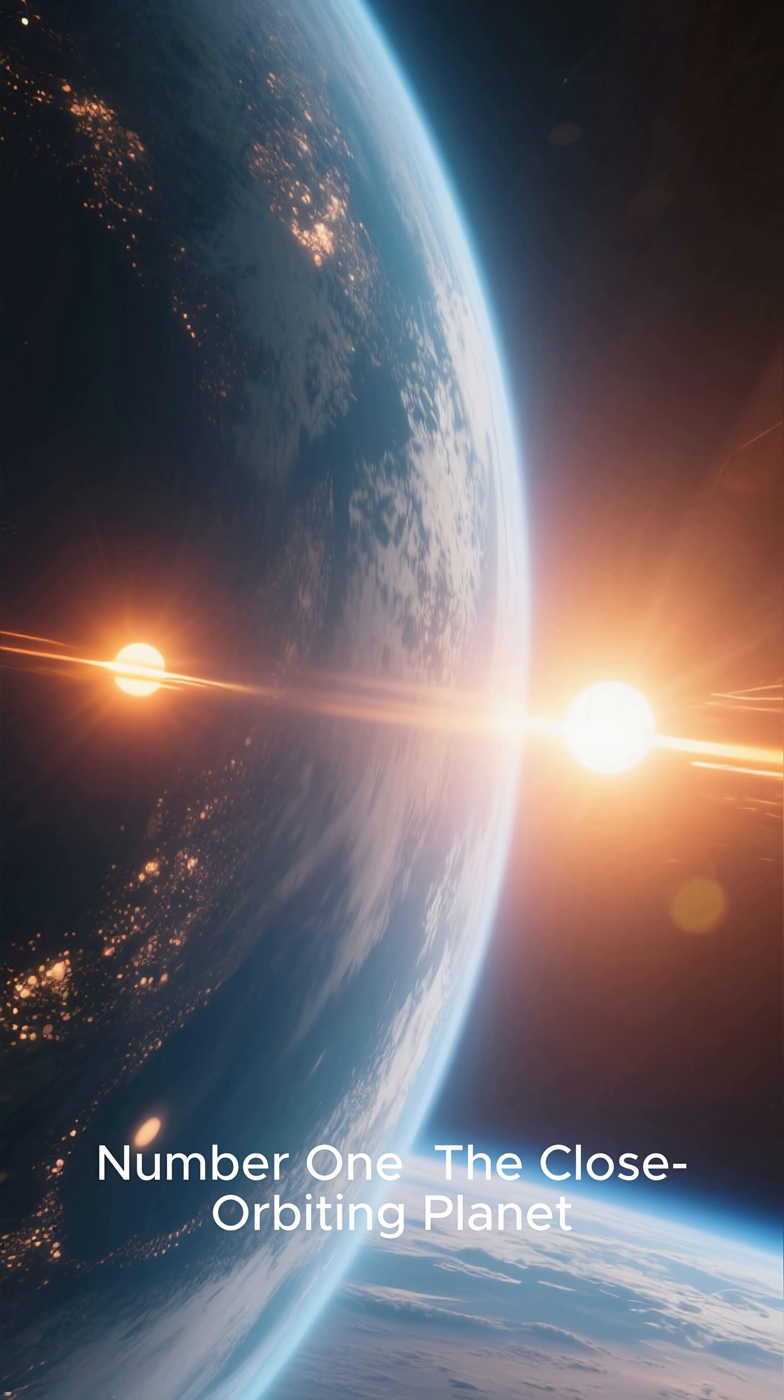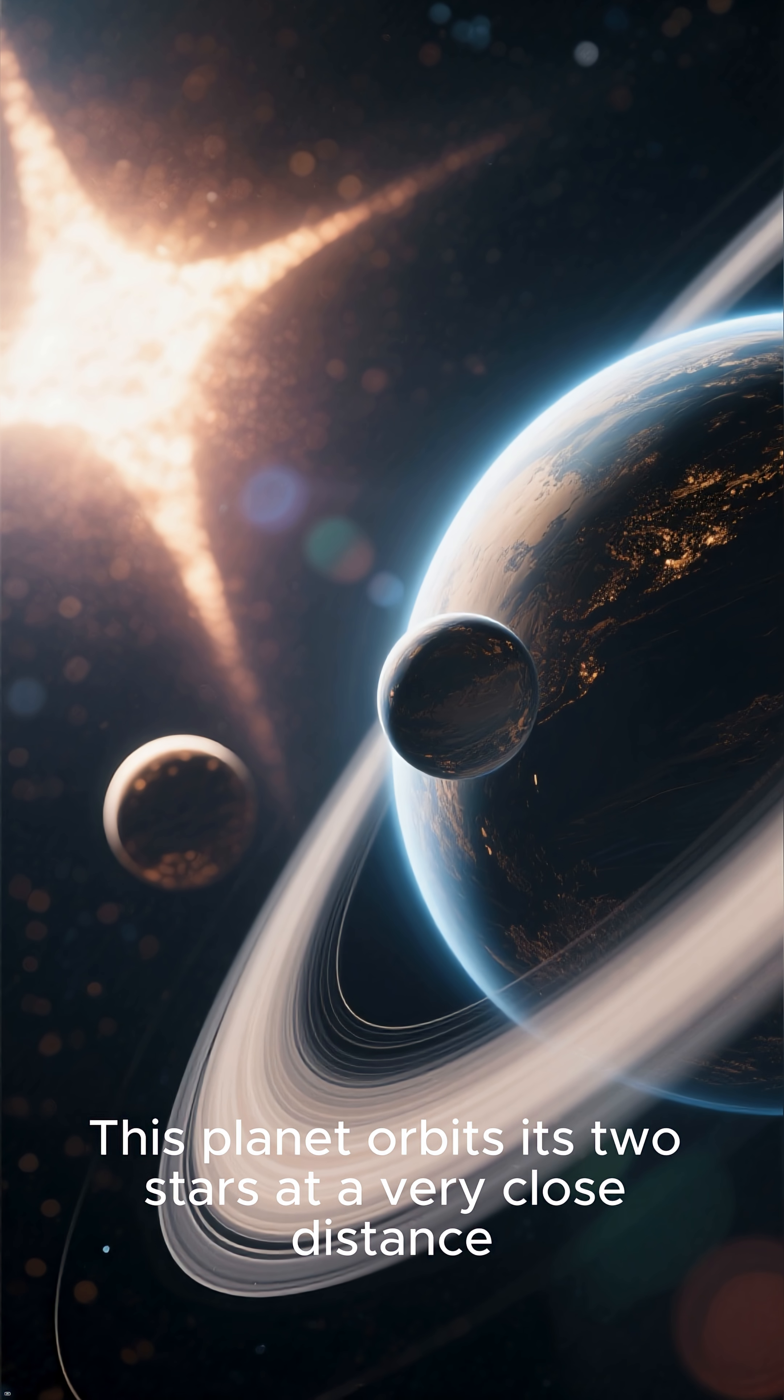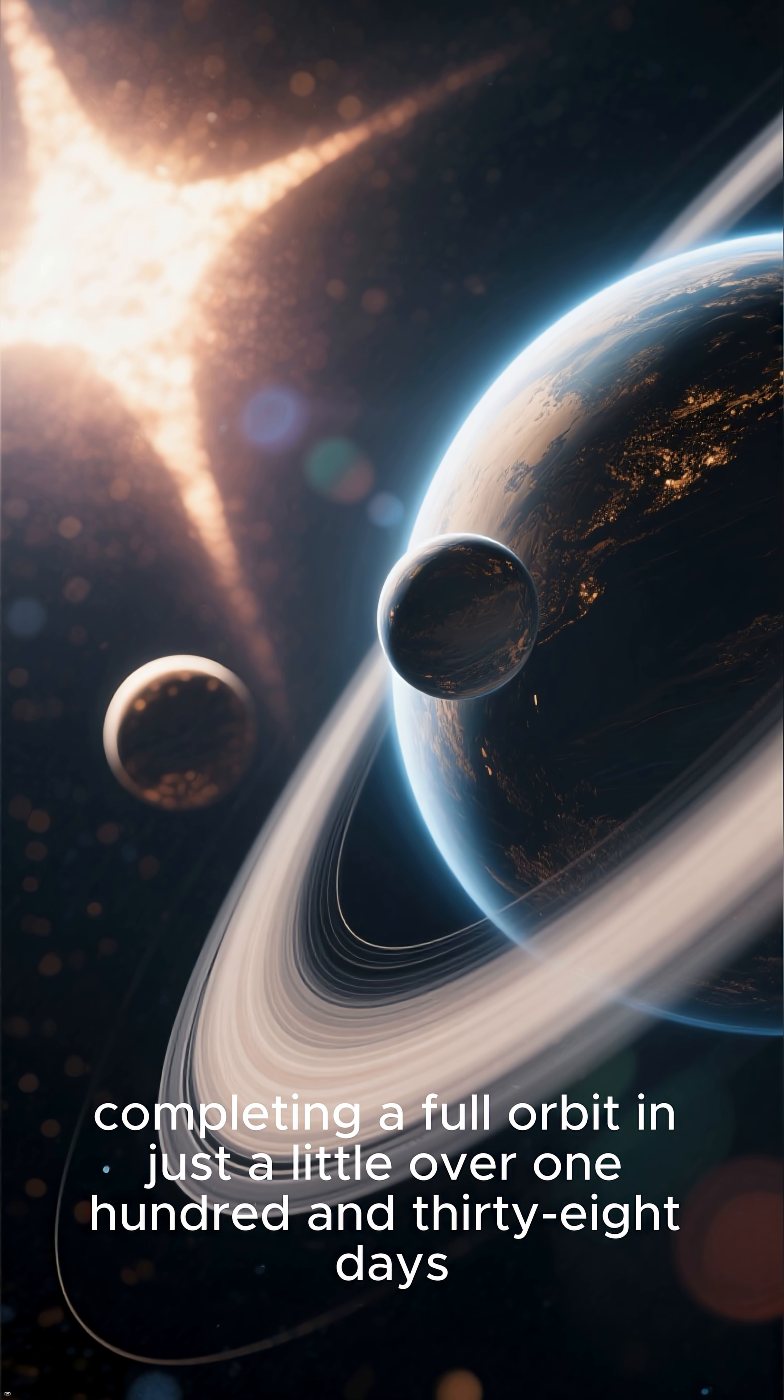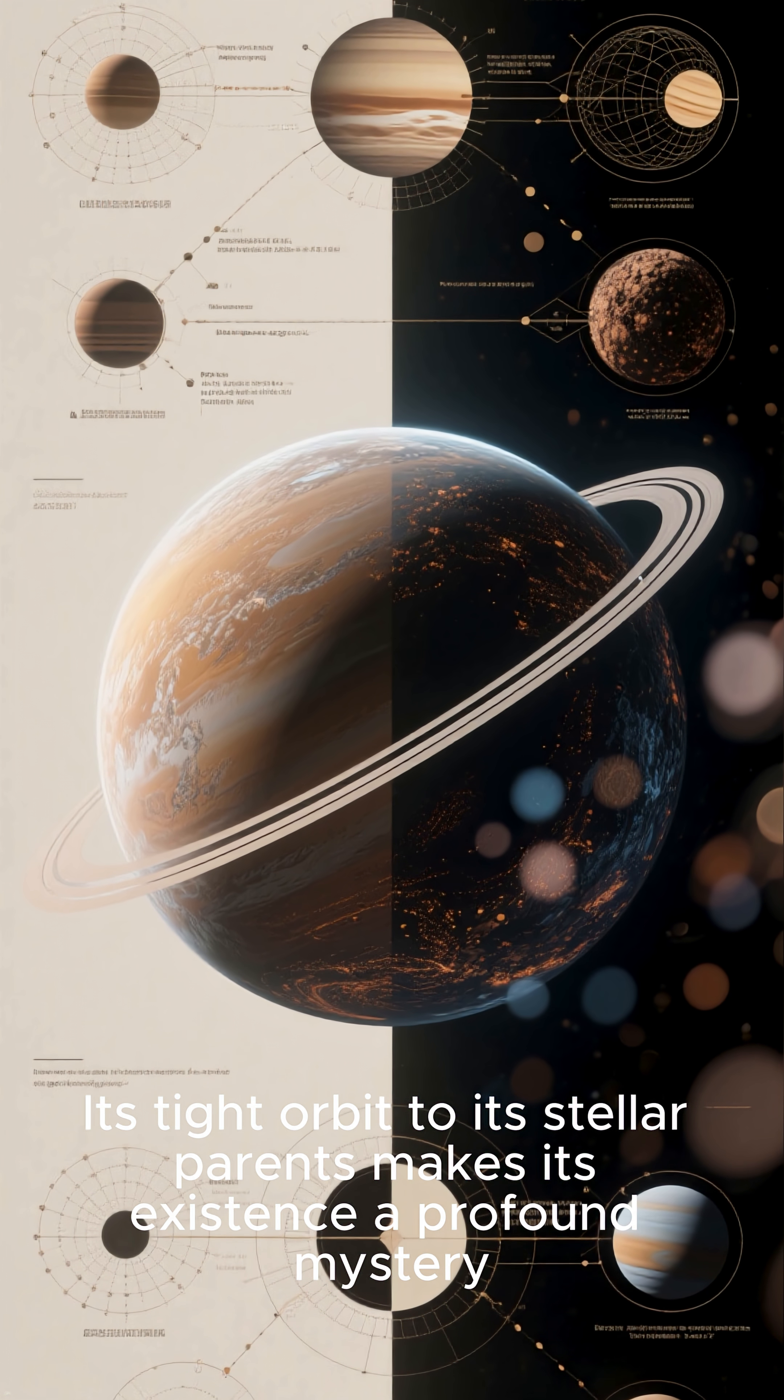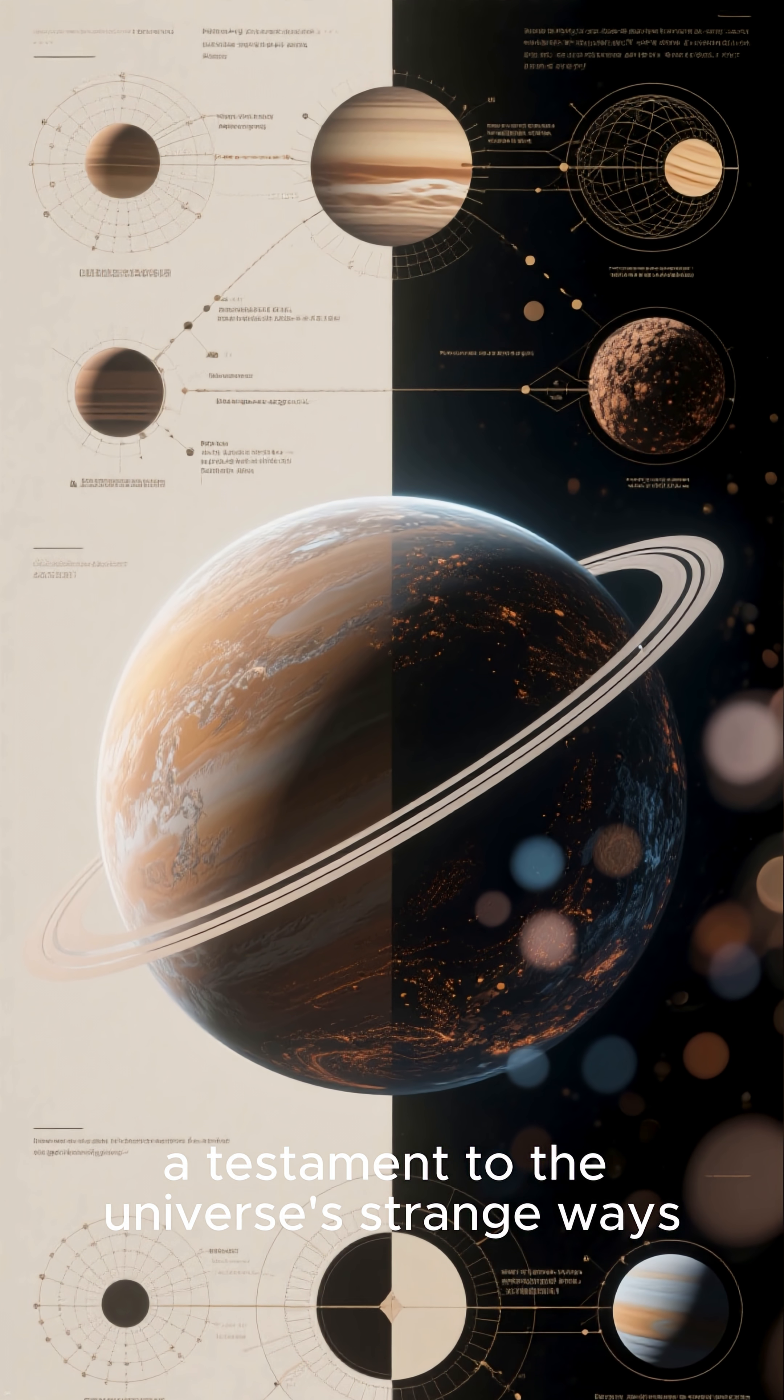Number one, the close orbiting planet. Finally, the most incredible binary system of all. This planet orbits its two stars at a very close distance, completing a full orbit in just a little over 138 days. Its tight orbit to its stellar parents makes its existence a profound mystery, as it defies conventional theories about how planets can form in such a chaotic and close-to-star environment, a testament to the universe's strange ways.